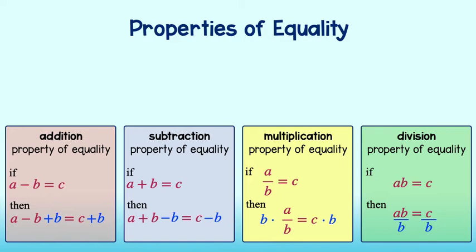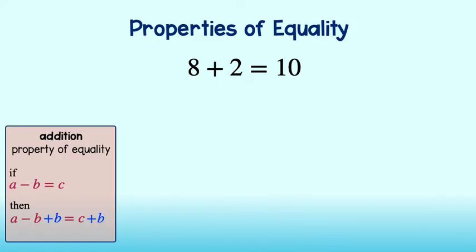The best way to understand this is to look at an example. We have the equation 8 plus 2 equals 10. We understand this equation to be true. Let's use the addition property of equality, which says that if we add the same number to both sides of the equation, the equation will still give us a true statement. So let's say we add 5 to both sides of the equation. The dotted line just helps me keep the right and left sides separate. 8 plus 2 plus 5 is equal to 15 on the left-hand side and 10 plus 5 equals 15 on the right-hand side. Since 15 equals 15, we still have a true statement.